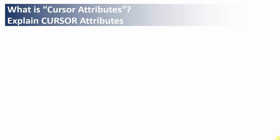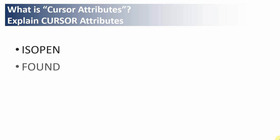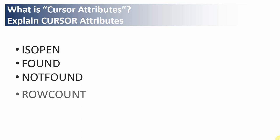Cursor attributes are nothing but the way by which we can get runtime information about the cursor. Oracle provides four cursor attributes: IS OPEN, FOUND, NOT FOUND, and ROWCOUNT. We can use these four attributes to get information about the cursor and its execution.